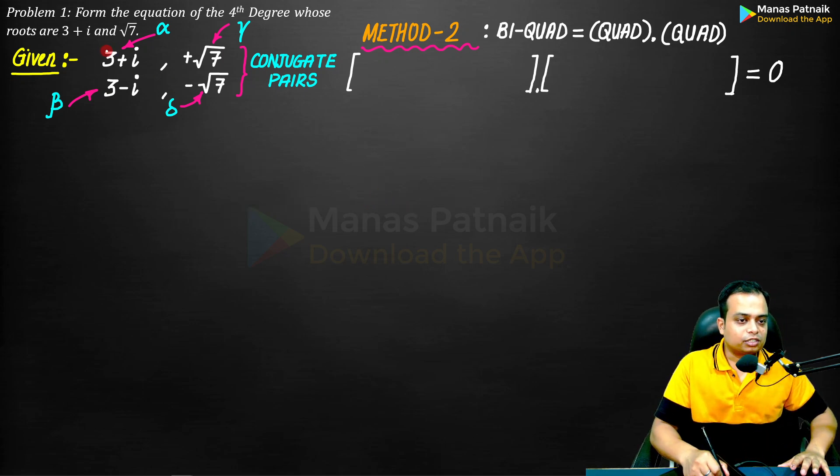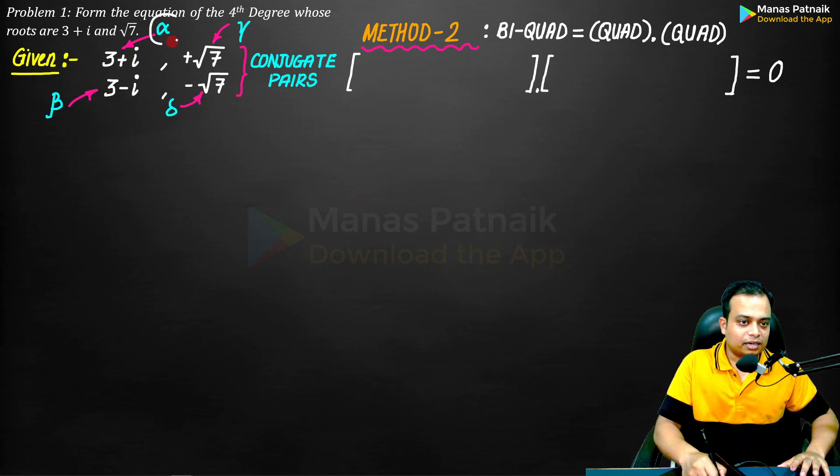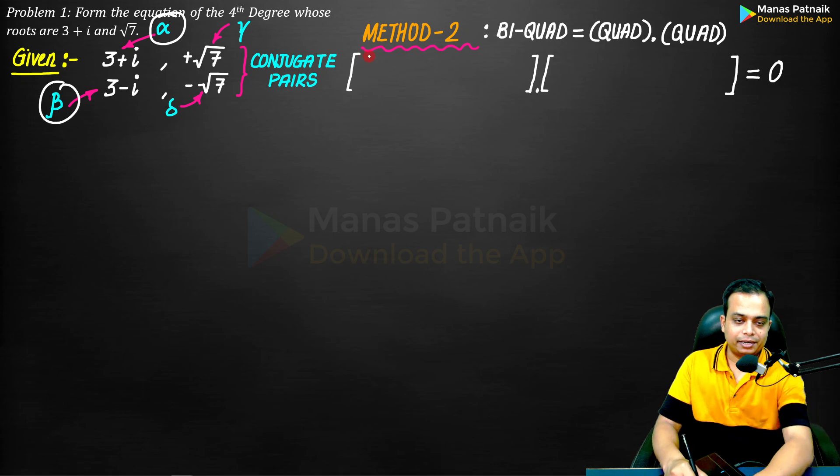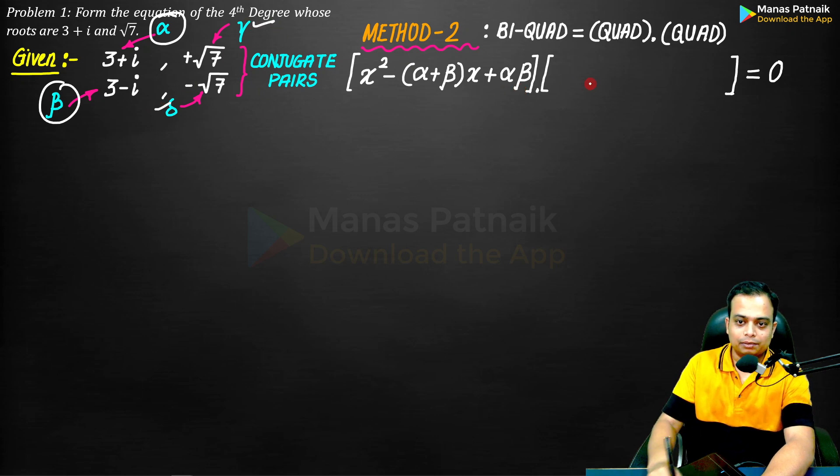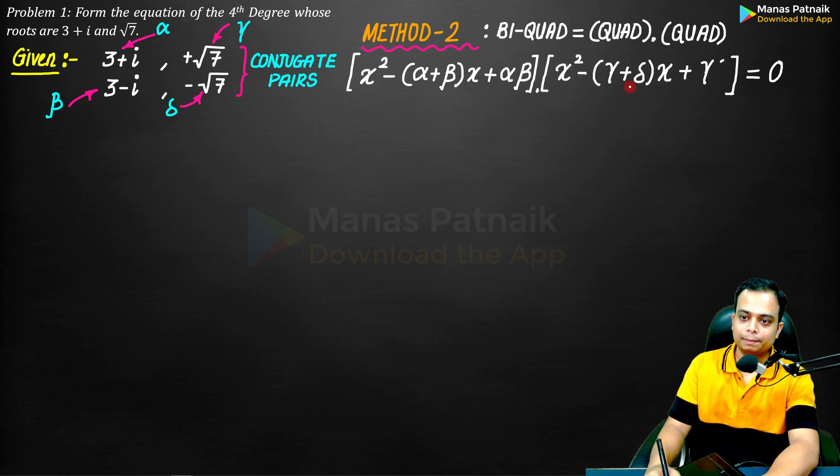First of all, take a look at 3 plus iota and 3 minus iota. These have been marked as alpha and beta. So what we'll write is x square minus alpha plus beta into x, plus alpha beta product of the roots. Again, for gamma and delta you have to do the same thing.